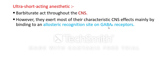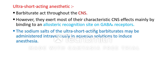After the barbiturates act on GABA-A receptors, they open the chloride ion channels and allow influx of chloride ions inside the nerve cells, producing hyperpolarization of nerve cells. In other words, barbiturates produce general anaesthesia by acting on the allosteric recognition site on GABA-A receptors. The sodium salts of ultra-short acting barbiturates may be administered intravenously in aqueous solution to induce anaesthesia.